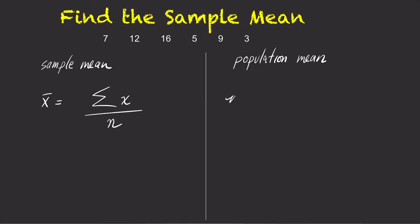For population data, we use mu to represent the population mean. To find mu, take each number from the data set, add them up, and then divide the sum by the population size.